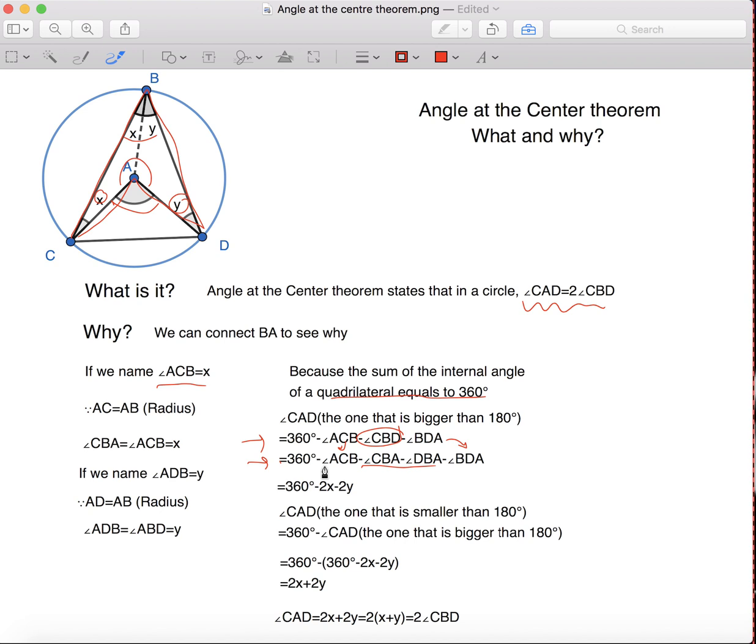We know that angle ACB, if we look at this graph, is X, and angle CBA is also X. Angle DBA is Y, and angle BDA is Y. So, this equation can simplify to 360 degrees minus 2X minus 2Y.